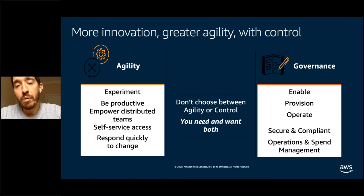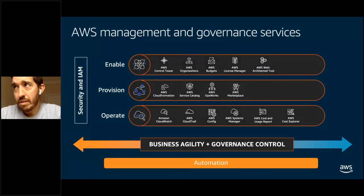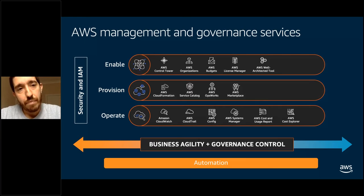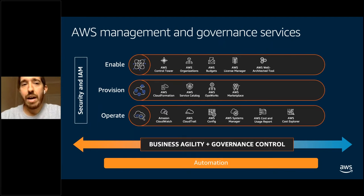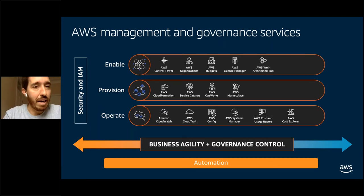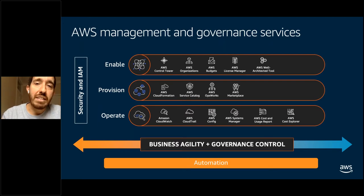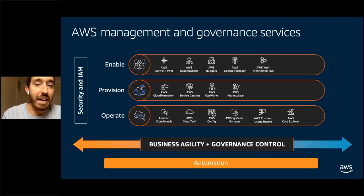When IT deploys management and governance services on AWS, they can support innovation, unlock provisioning bottlenecks, improve their security and compliance posture, enhance operational efficiency and reduce cost. For that purpose, we have a set of pillars called enable, provision, and operate. Control Tower fits under the enabling pillar. You can see from this slide that there are multiple services that in summary help you to innovate faster and apply them at scale.